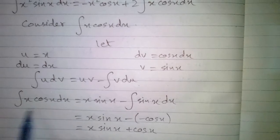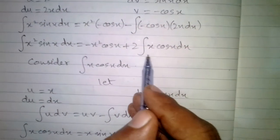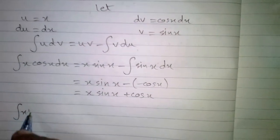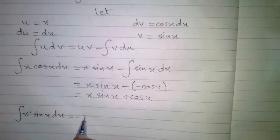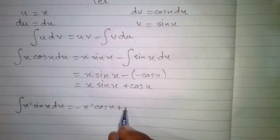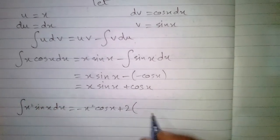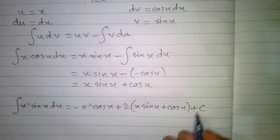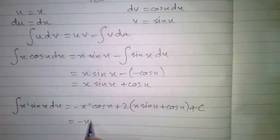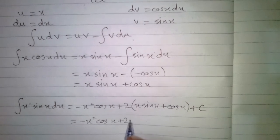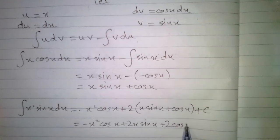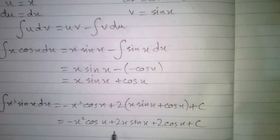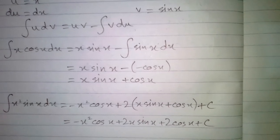Now we have the value of the integral of x cos x, so we substitute it back. The integral of x squared sin x with respect to x equals minus x squared cos x plus 2 times the quantity x sin x plus cos x, plus C, where C is the constant of integration. So the final answer is minus x squared cos x plus 2x sin x plus 2 cos x plus C.